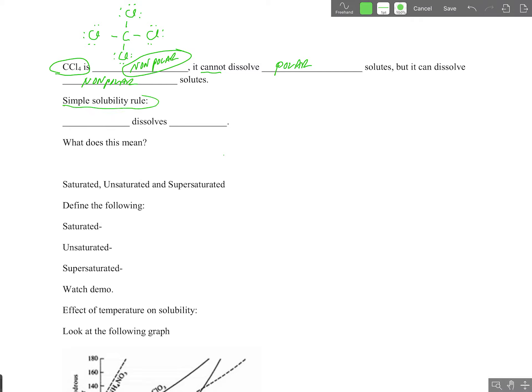So, we end up with this very simple solubility rule. It's three words long. Like dissolves like. And that simply means that polar solvents can dissolve polar solutes or solutes that have positive and negative ends like ionic compounds.